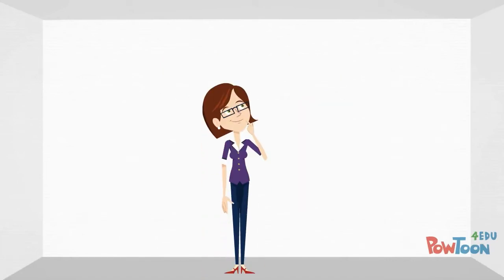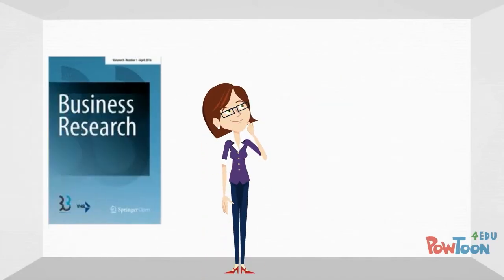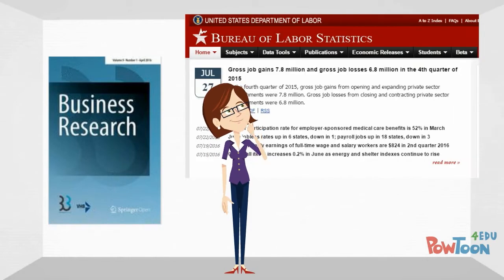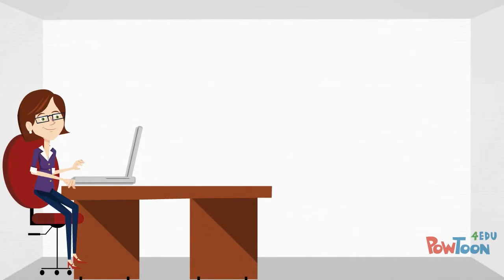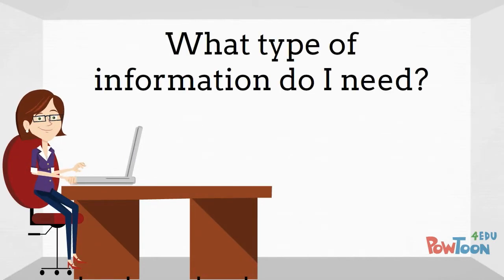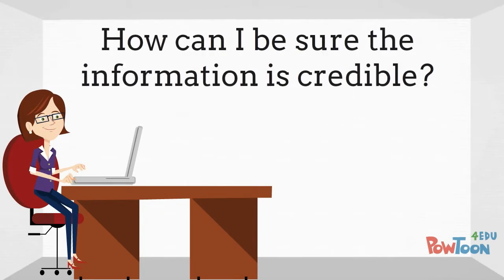As you research, it is important for you to be able to distinguish between different types of sources and to recognize when certain sources are appropriate and credible. When you search, consider questions such as: What type of information do I need? What kinds of sources contain the information that I need? How can I be sure that the information I have found is credible?